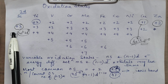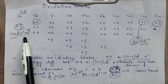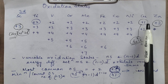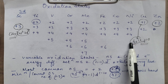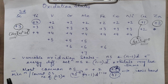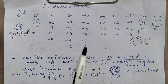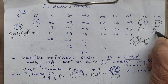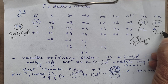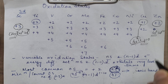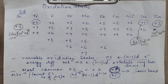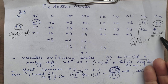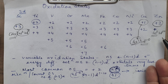Scandium shows only +3 because of its configuration. Copper's lowest is +1 because of 1 electron in the S orbital. Zinc exhibits only one oxidation state, that is +2, because its configuration is 4s2 3d10. The valence shell has Ns2, i.e., 4s2, so only those participate. The 3d10 is a stable configuration and will not participate at all.